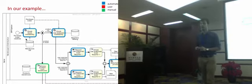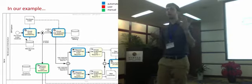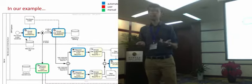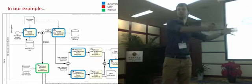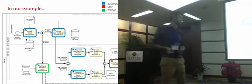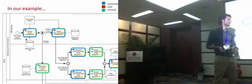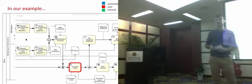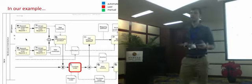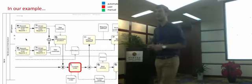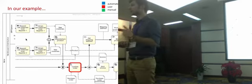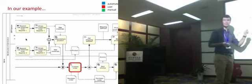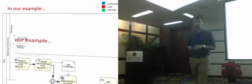Retrieve product from warehouse is a manual task — the warehouse operator has to manually pick up the product from a shelf. Similarly, obtain raw materials is another example of a manual task. Confirm order is an example of a user task, where somebody within sales — like an order manager — receives an order in electronic form, checks the status, and then confirms that order.